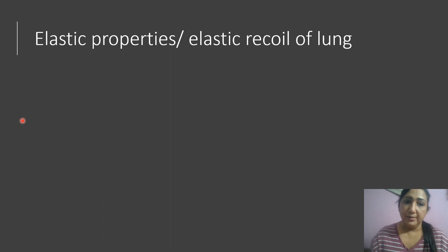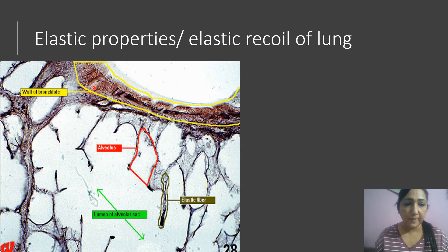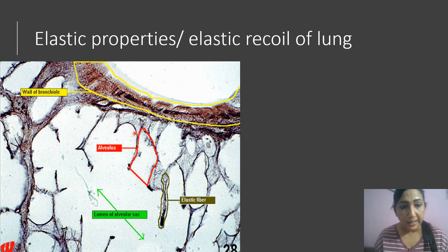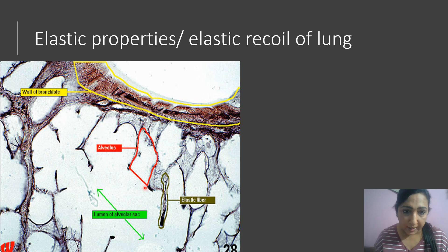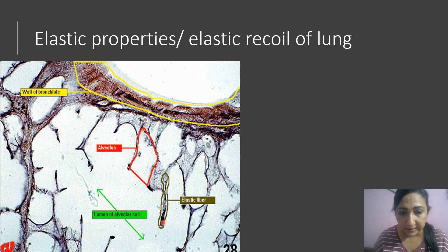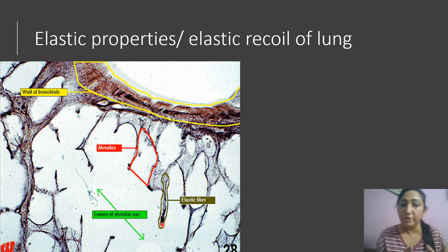We are going to discuss the elastic property — the elastic recoil of the lung. In this diagram, this is the bronchial wall, and around it you can see the alveolar walls. This is one alveolus, and this is the sac of the alveolus. Here are the elastic fibers, which form the interstitium of the lung tissue.